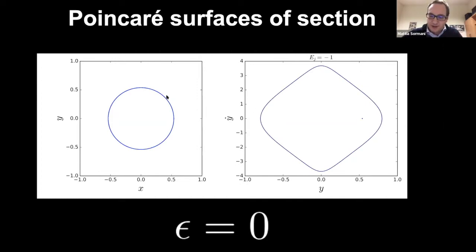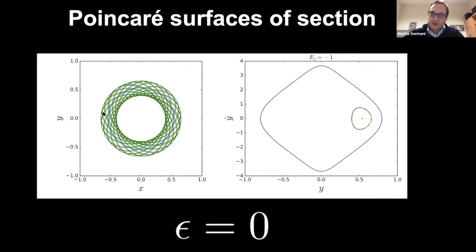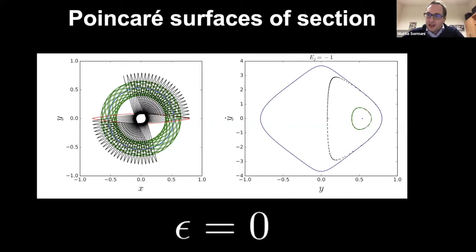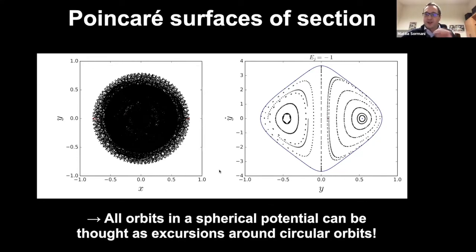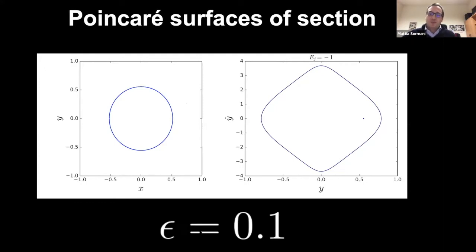Now let's give this orbit a little kick. You get epicycles around the orbit, and in the surfaces-of-section plane the points circulate around the closed orbit. You can find other closed orbits in an axisymmetric potential; however some are unstable — the particle doesn't remain close to the initial orbit. When you do this for all possible orbits, every planar orbit in an axisymmetric potential can be understood as an excursion around the circular orbit.